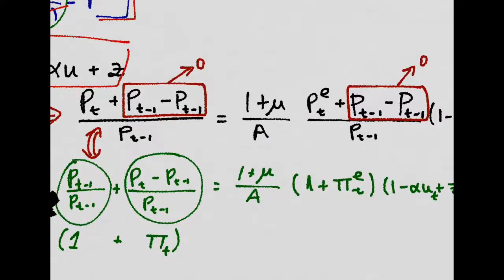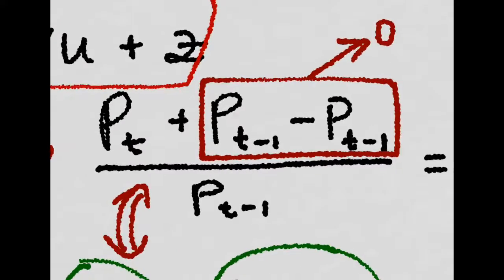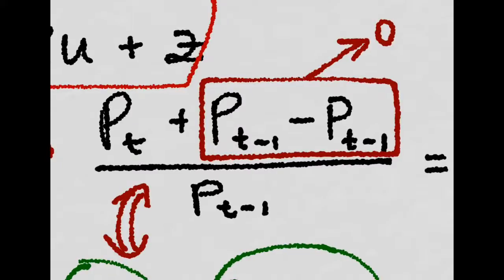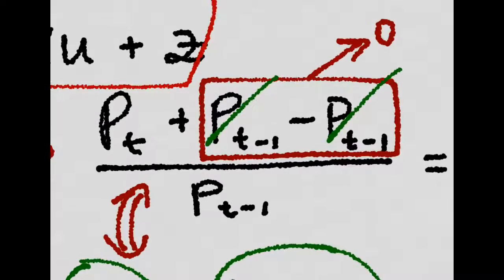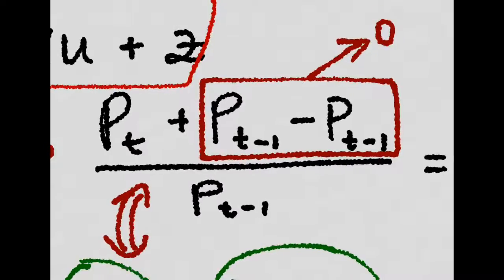Here we're not changing anything. We're adding p at t minus 1 minus p at t minus 1, so this would really cancel out and be 0. But we'll leave it there, and you'll see why.